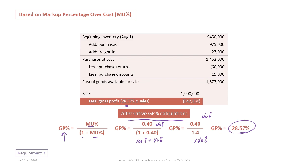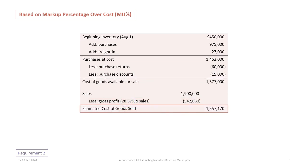Now we can put this back into our calculation. Our sales were $1,900,000 and our GP percentage is 28.57%, so our estimated gross profit is $542,830. Please note we are not deducting 40% gross profit as in the previous example — in Tutorial 18A we were given a gross profit percentage of 30%, whereas here we must back-calculate the GP percentage. Then $1,900,000 less gross profit of $542,830 gives us estimated cost of goods sold of $1,357,170.